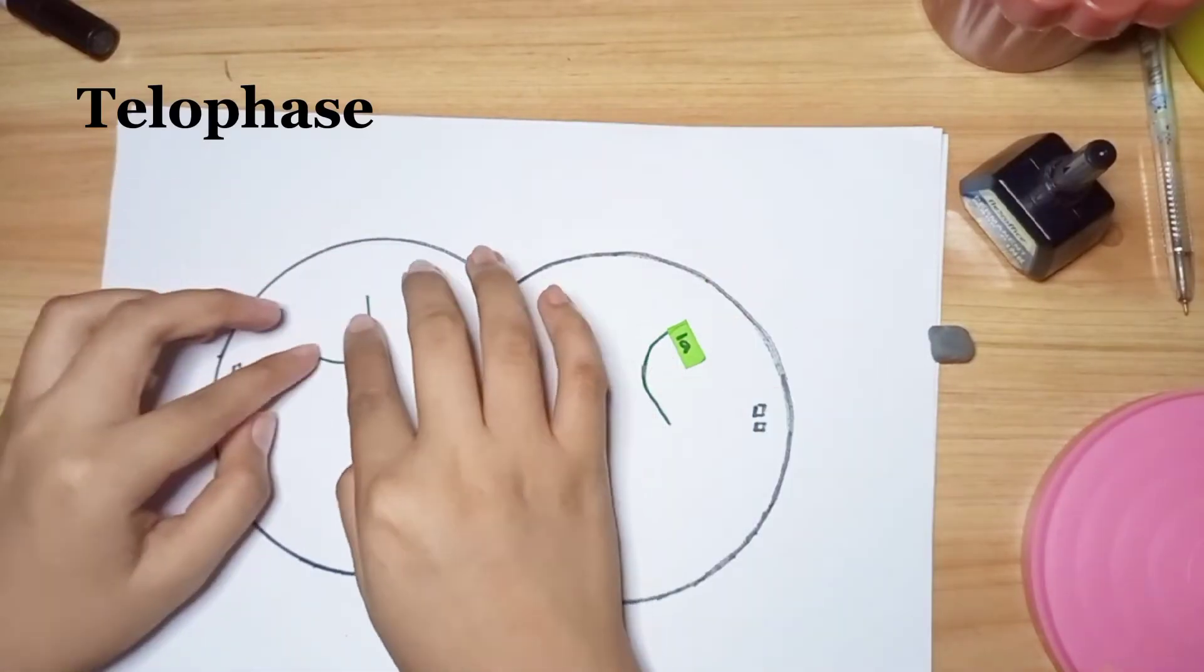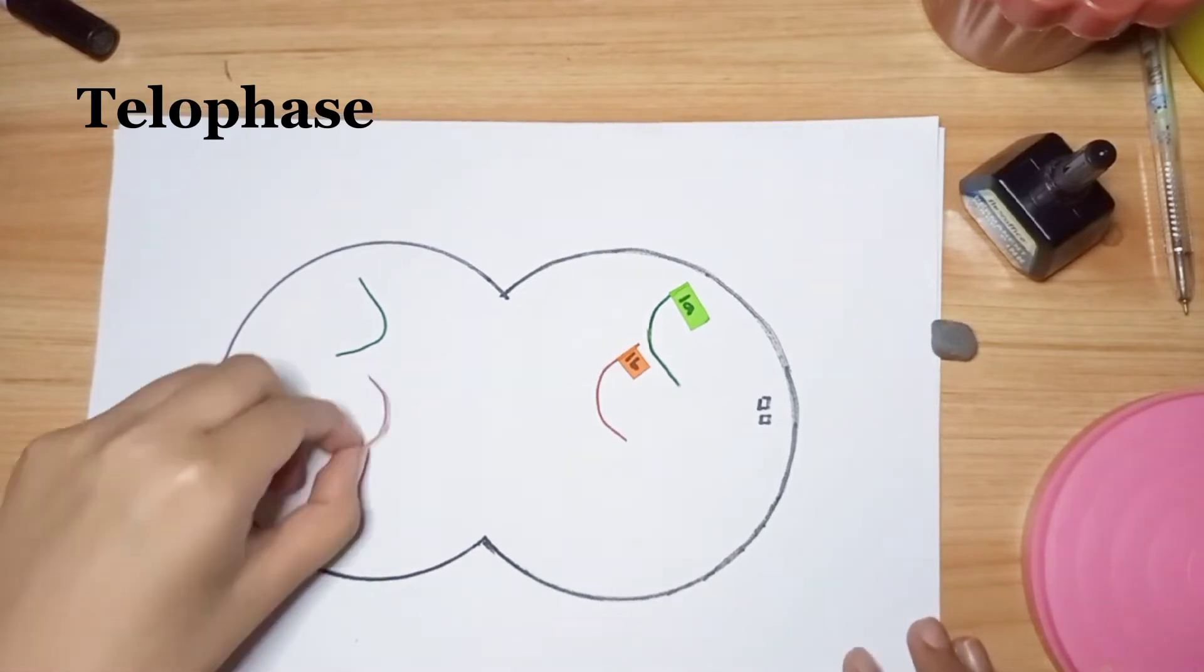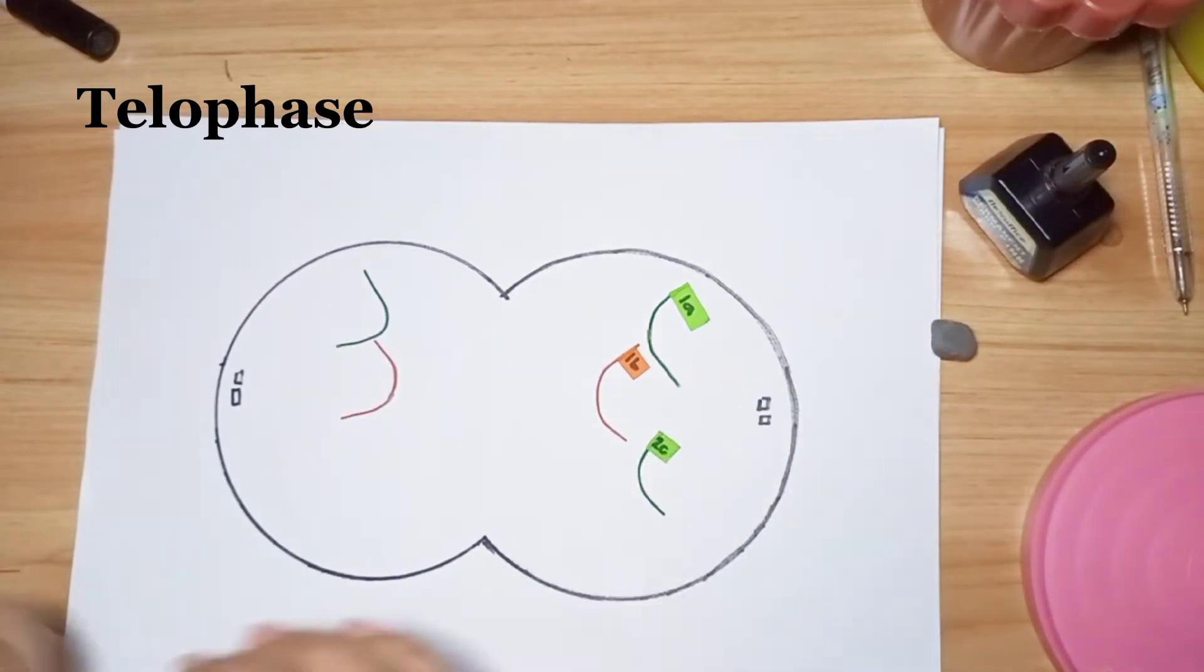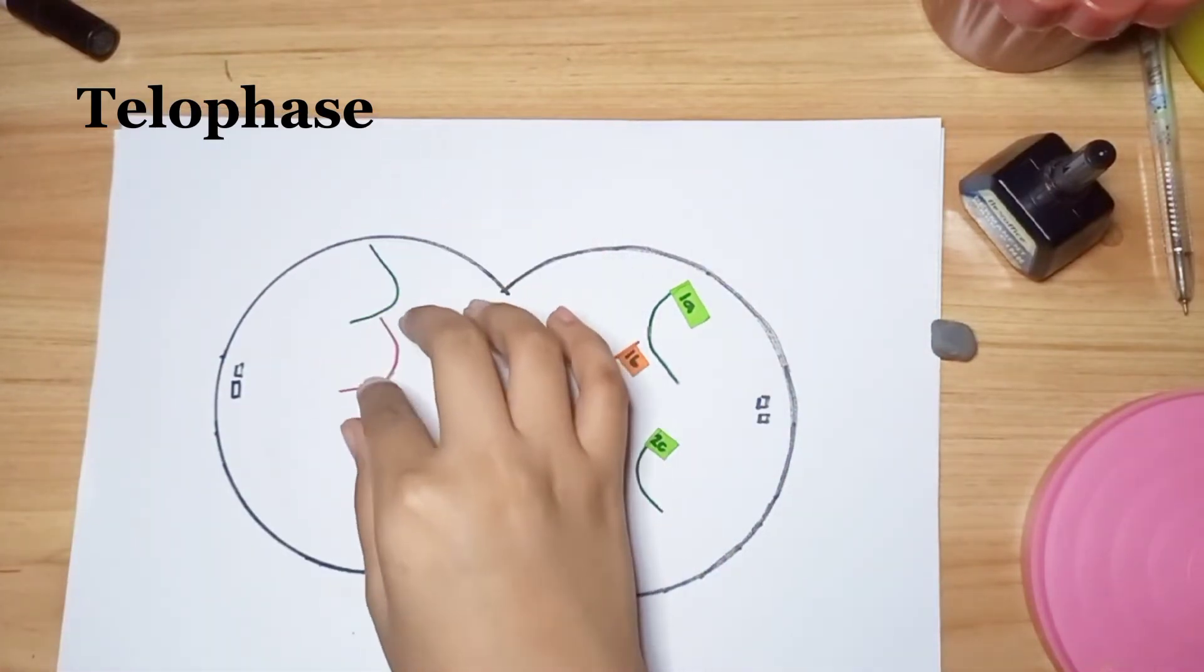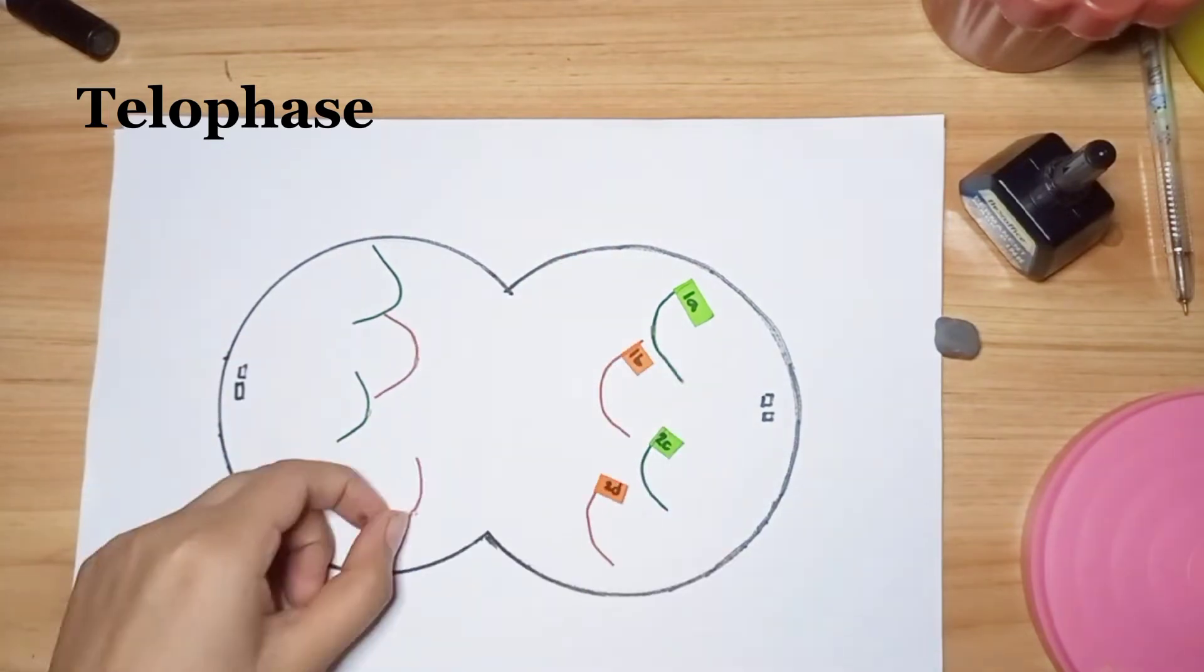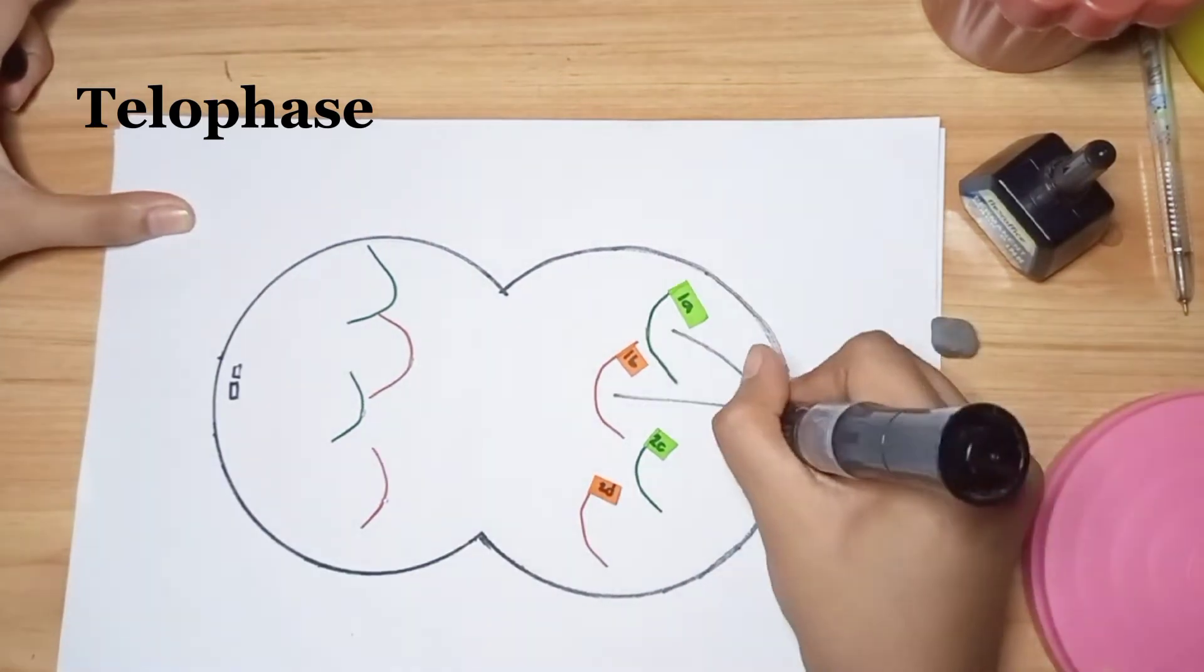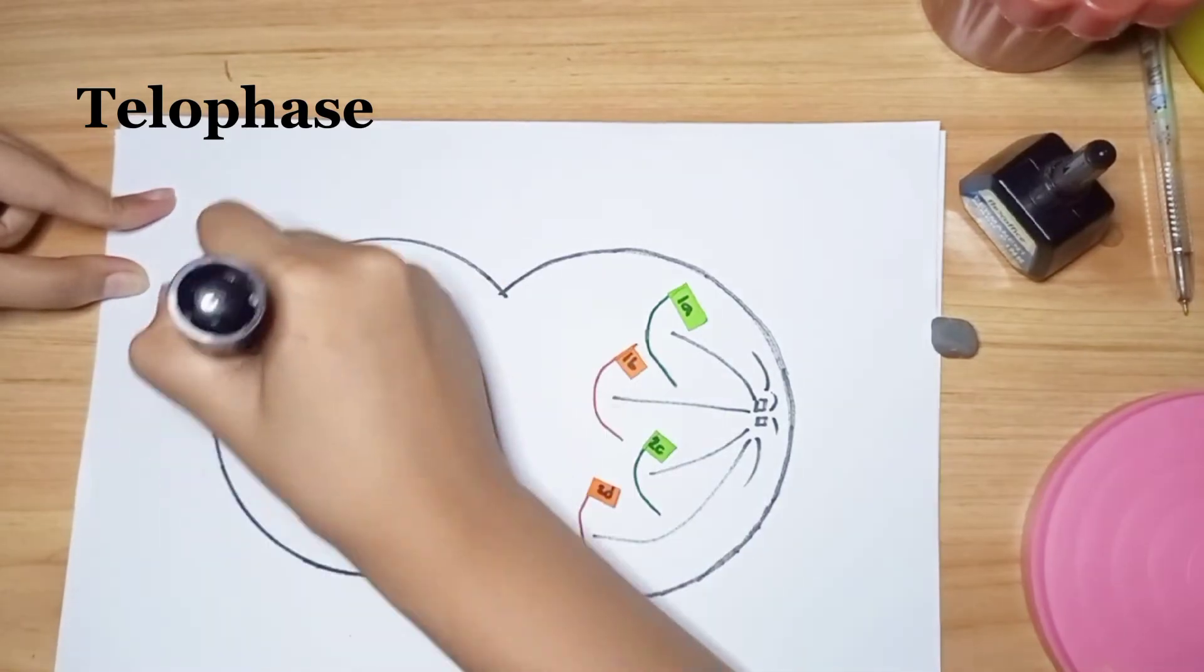Telophase. During telophase, a nuclear membrane forms around each set of chromosomes to separate the nuclear DNA from the cytoplasm. The chromosomes begin to uncoil, which makes them diffuse and less compact.